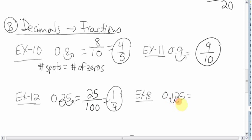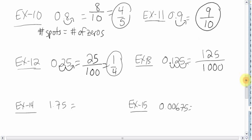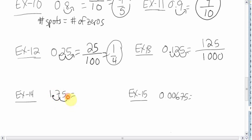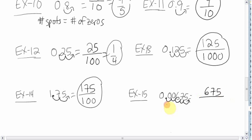Here, how many spots do we have to move it? One, two, three. Three spots, three 0s. This gives us 125 over 1,000. These last two, we're going to move this how many spots? One, two. Two spots, two 0s. So this gives us 175 over 100. And thankfully, you don't have to worry about reducing in this section. What about here? How many spots do we have to move the decimal? One, two, three, four, five. Five spots, five 0s. This number then becomes 675. And a power of 10 with five 0s, which is 100,000. Again, don't worry about reducing it. That's it.